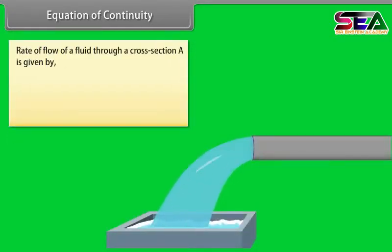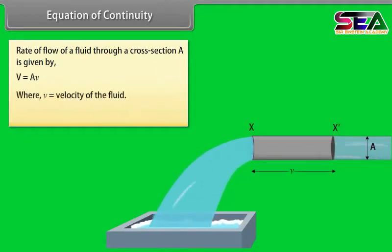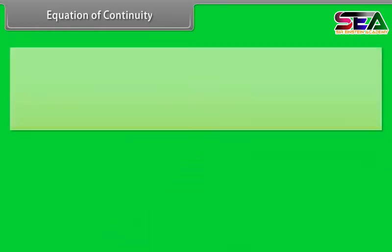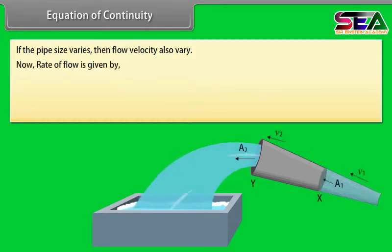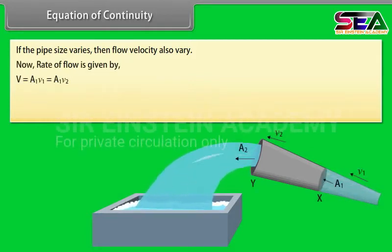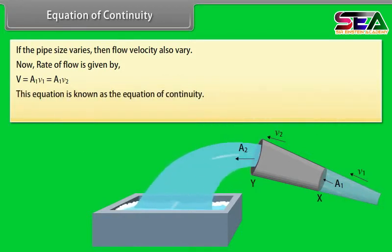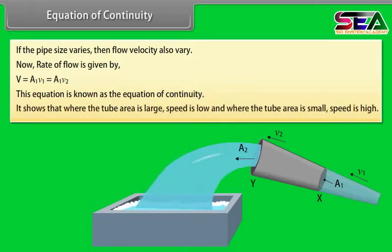Equation of continuity: The rate of flow of a fluid through a cross-section A is given by V = A × v, where v is the velocity of the fluid and V is the volume of the fluid. If the pipe size varies, the flow velocity also varies. The rate of flow is given by A₁V₁ = A₂V₂, which is known as the equation of continuity. It shows that where the tube area is large, speed is low, and where the tube area is small, speed is high.